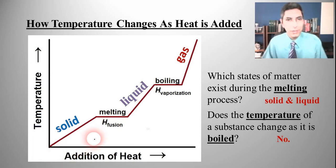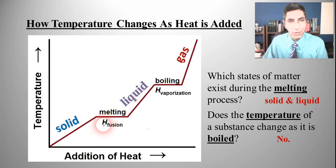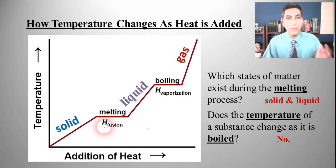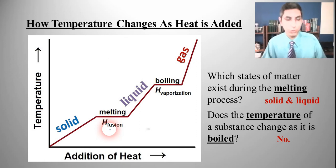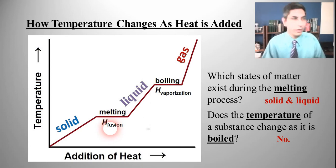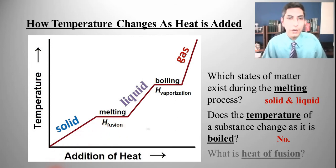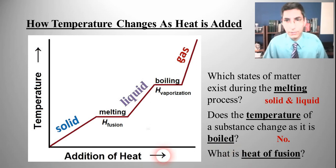When we talk about some of these other labels on the graph, we have the heat of fusion or the heat of vaporization. The heat of fusion is basically the amount of energy required to melt or freeze one mole of a substance. We could express it in joules per gram as well, describing how much energy it takes to melt or freeze one gram of that substance.